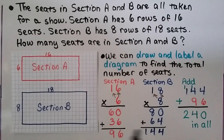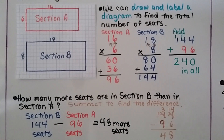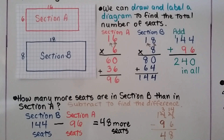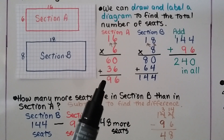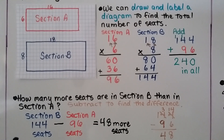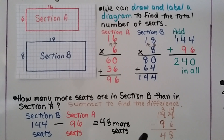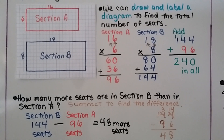Now we add the two sums together: one hundred forty-four plus ninety-six is equal to two hundred forty in all, so there are two hundred forty seats in all. Now it's asking us how many more seats are in section B than in section A. Section B has one hundred forty-four and section A has ninety-six. We subtract to find the difference: one hundred forty-four minus ninety-six is equal to forty-eight more seats. We can add forty-eight plus ninety-six — if it equals one hundred forty-four, we did our subtraction correctly, using an inverse operation to check.